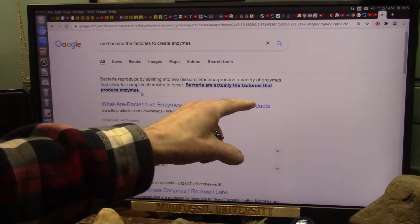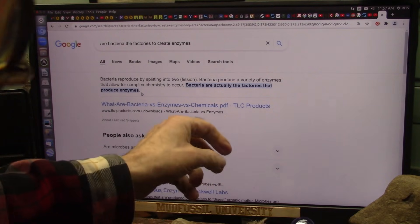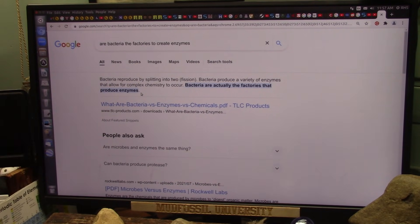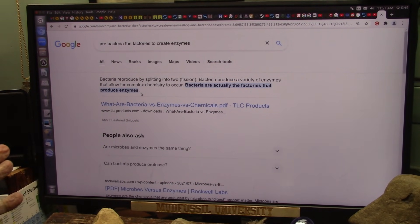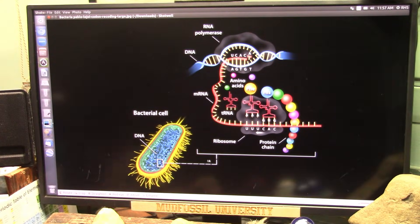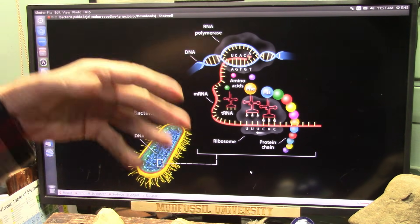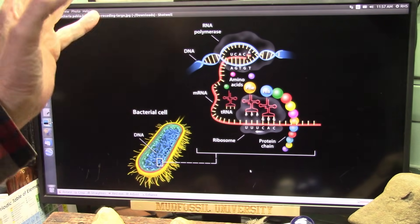Bacteria are the factories that produce the enzymes. You don't have the bacteria, you're not going to get the enzyme. Really, it's as simple as that. And if you don't have that enzyme, which is the ribosome, you're done. The ribosome basically is the enzyme.